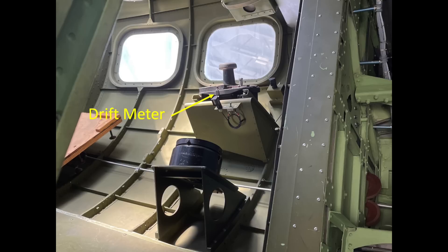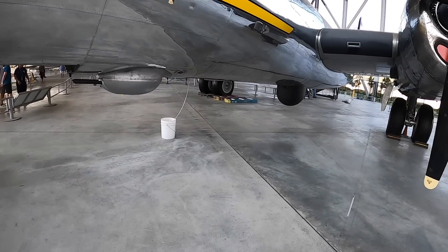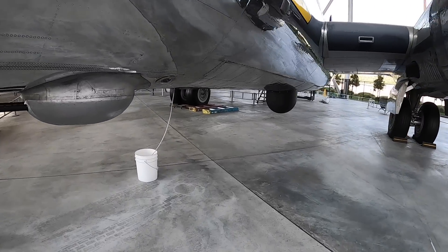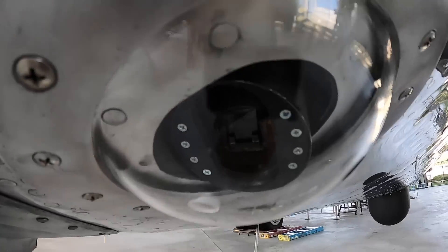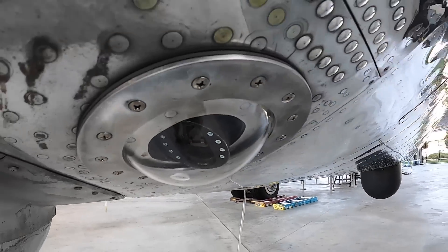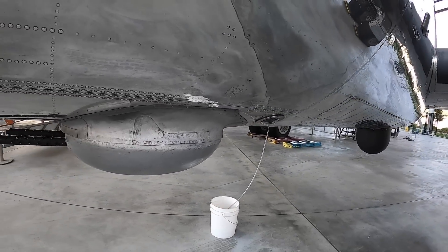Navigators were instructed to lock the pointer on texture or color variations when obtaining drift over the ocean or land devoid of features. B-29s and some B-17s adopted the more sophisticated B-3 drift meter. B-29s were pressurized, so their drift meters needed to be operated in the pressure vessel — this is the B-29's drift meter pressure port. If you have enjoyed this video, please consider commenting, liking, or subscribing to the channel WWII US Bombers.